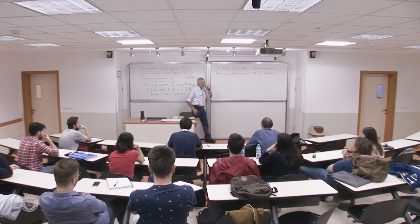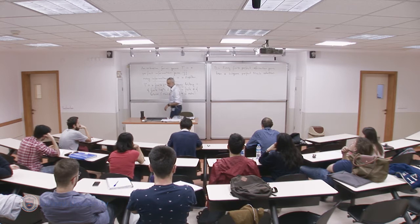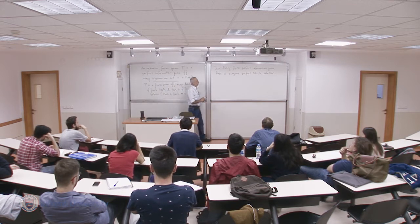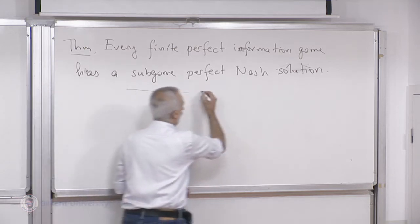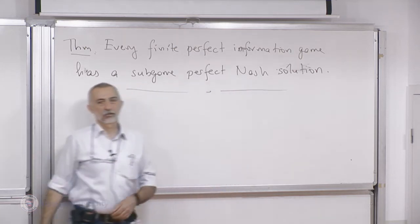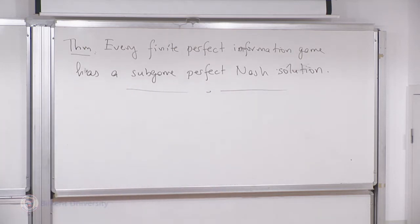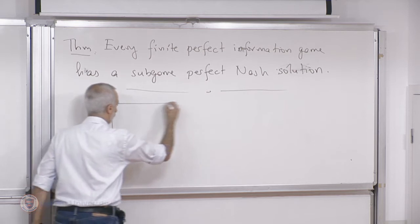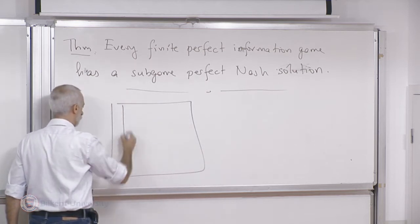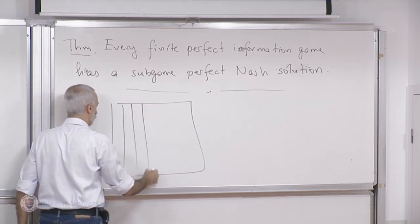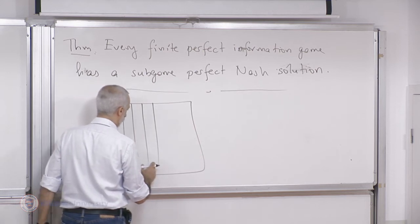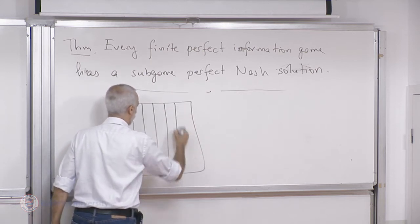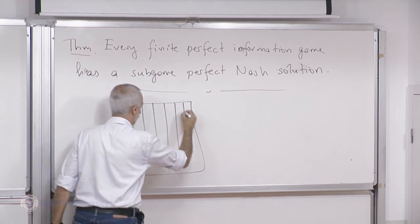So let's do some examples. Actually, let's play a game. This is a game introduced by David Gale. It's played on a board — we can take a chess board. So let's take an eight by eight grid: one, two, three, four, five, six, seven, eight.